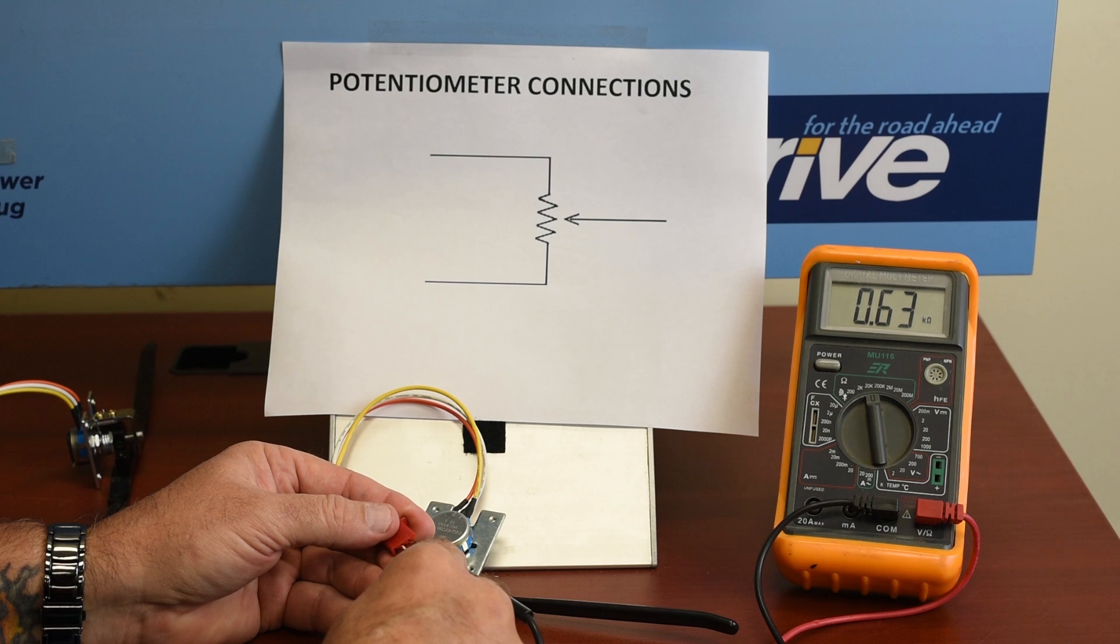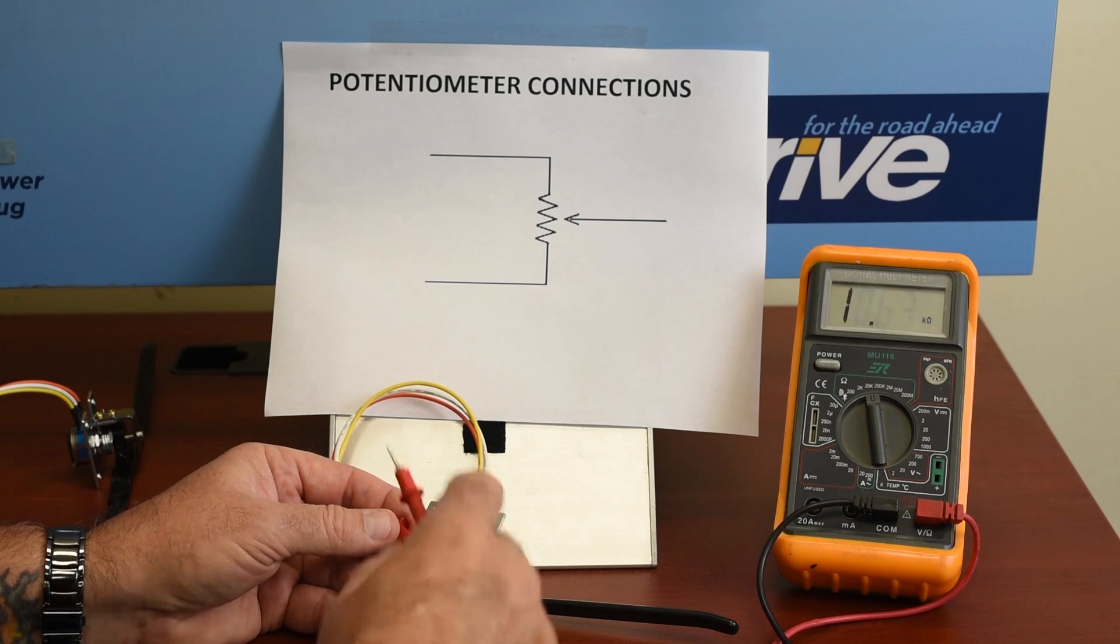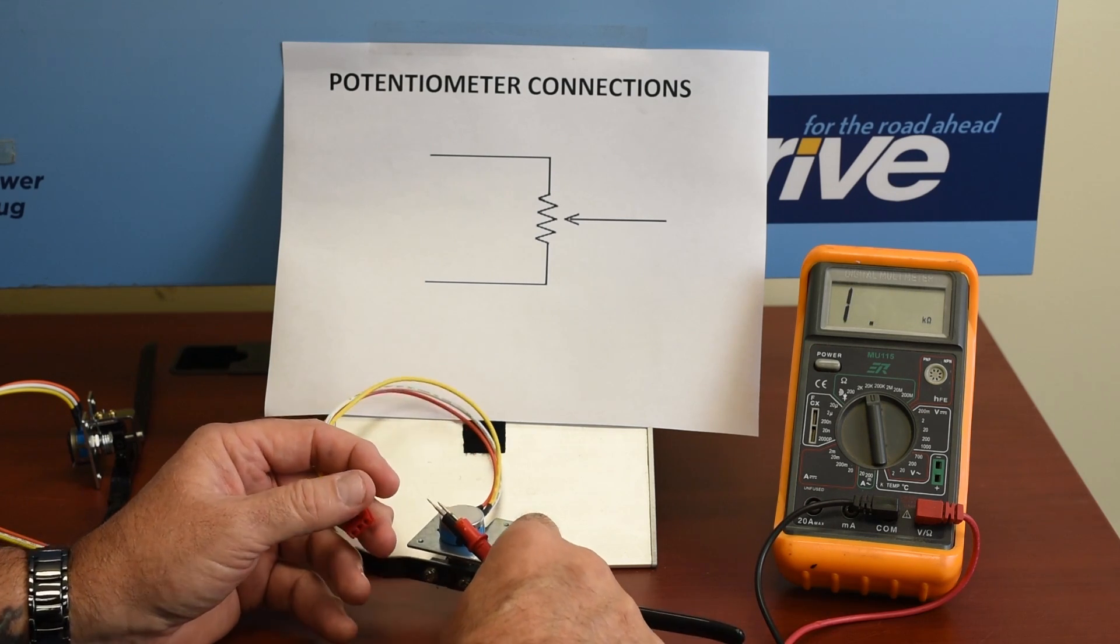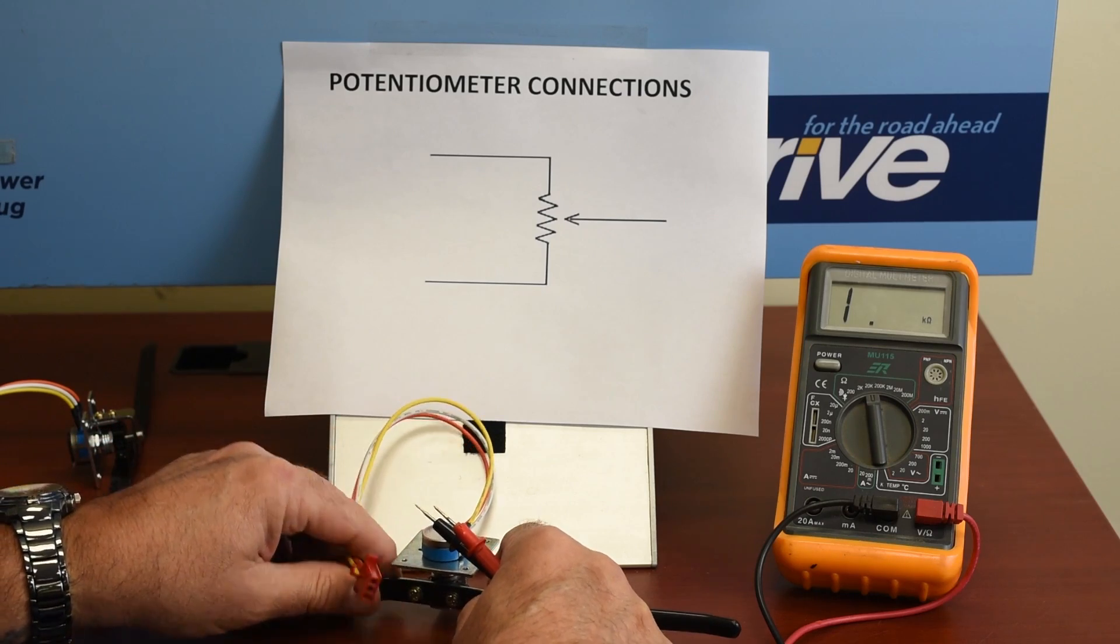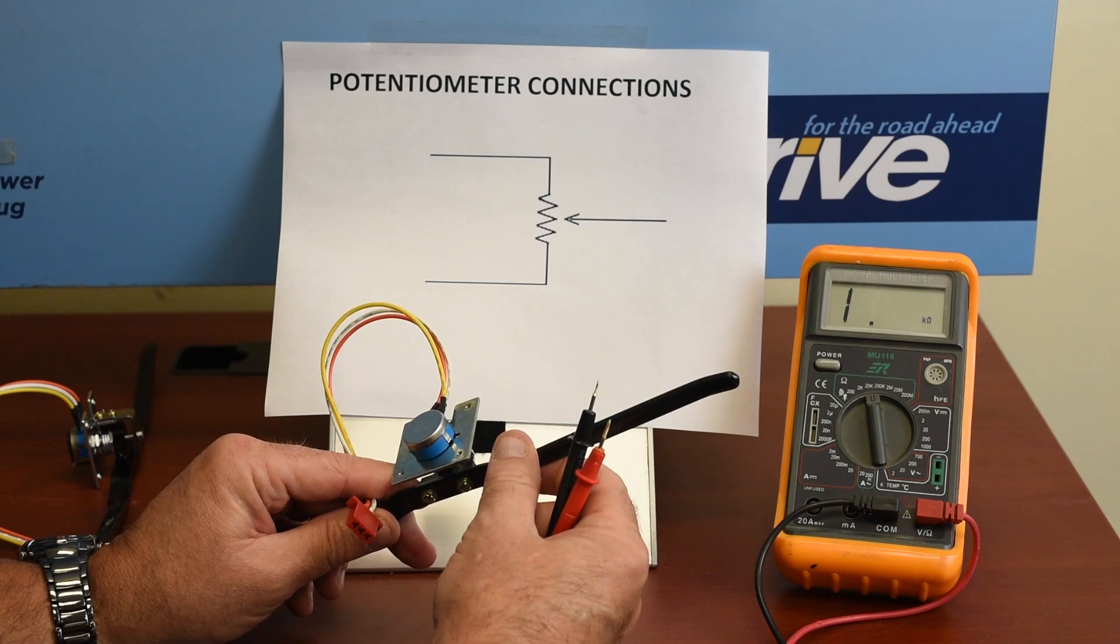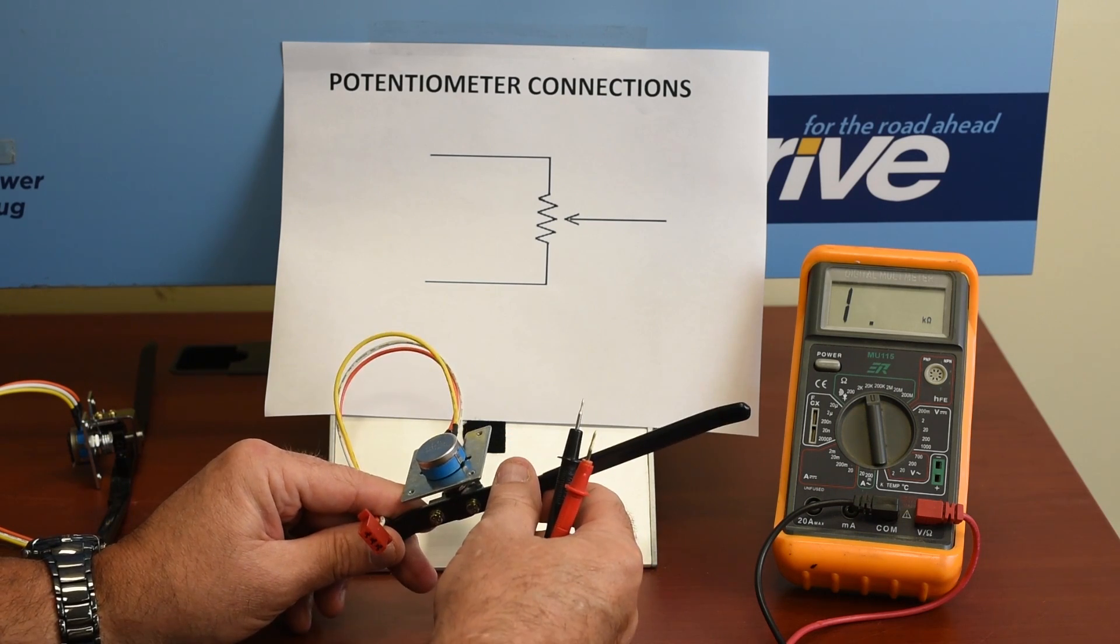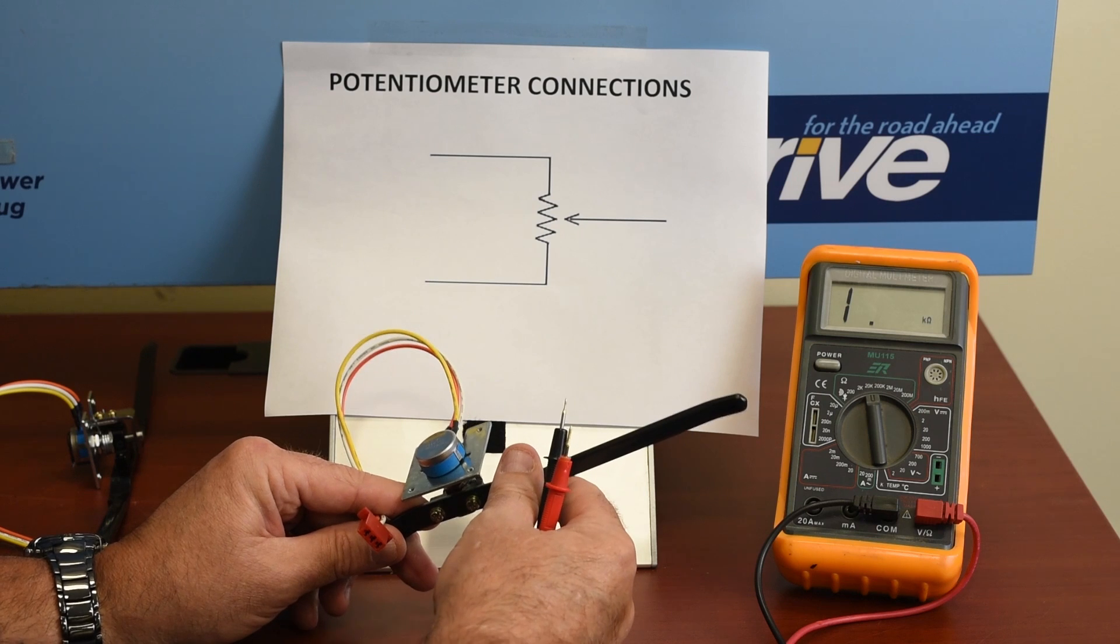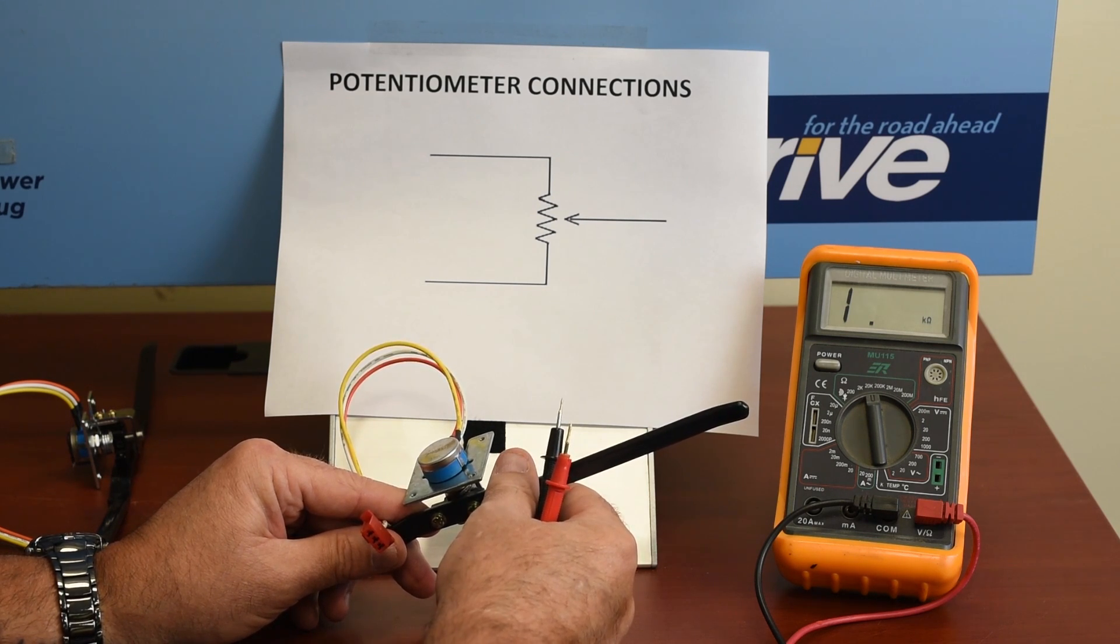So one side we get 4.8K, the other is 0.63. So we find that this pot is grossly off-center and unusable. What would happen here is that the controller would recognize this as being a throttle that's already depressed when you turn the key on, and the controller would fault and inhibit the scooter from driving.